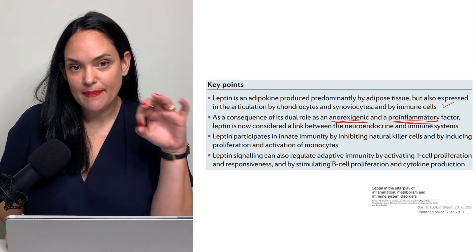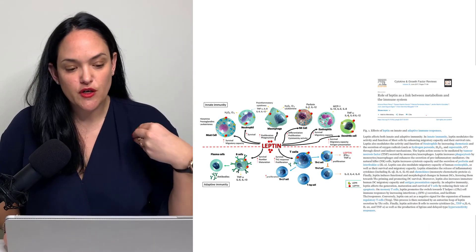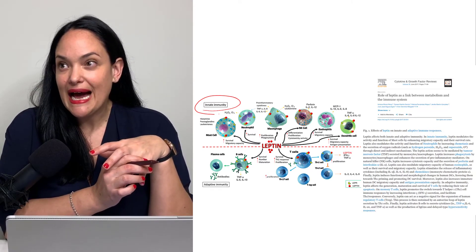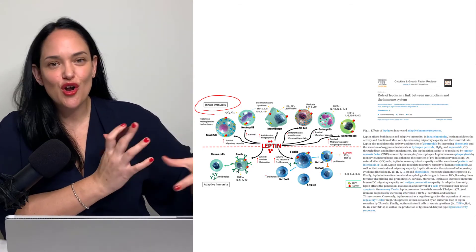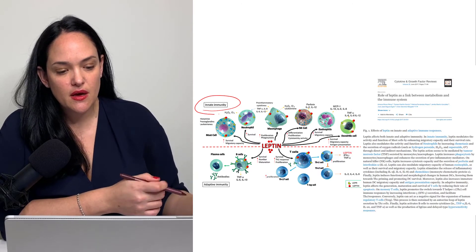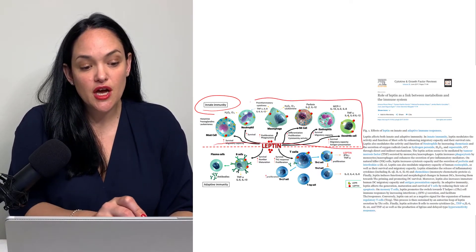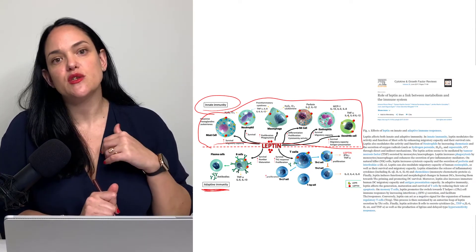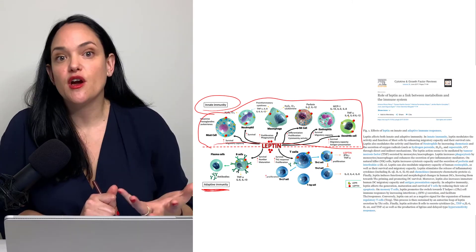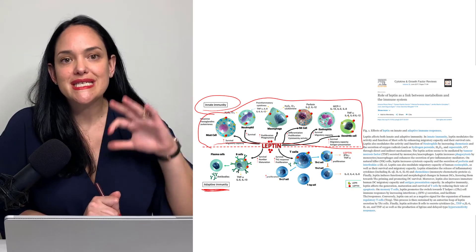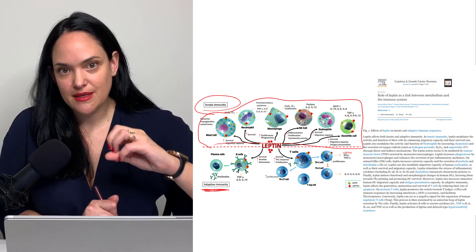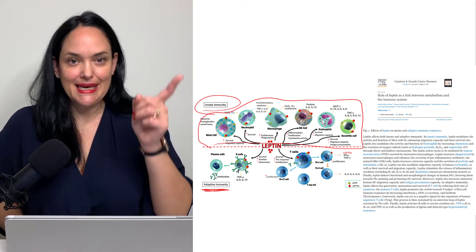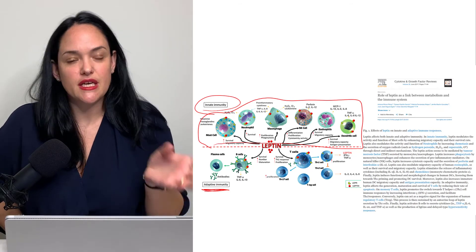Leptin has that appetite-decreasing effect, but it also has this inflammatory effect. If it's being secreted at higher levels, this is believed to be part of the link between the energy balance system and the immune system. Leptin promotes immune functions in particular — it is involved in both innate immunity, which is more non-specific and active to clear normal things in the body, and adaptive immunity, which is more related to fighting off a particular pathogen and remembering it. This shows how much leptin is linked to the activity of a number of different immune factors.